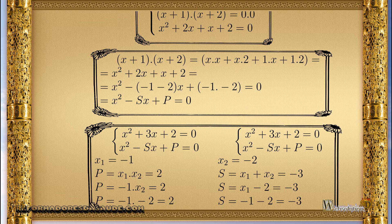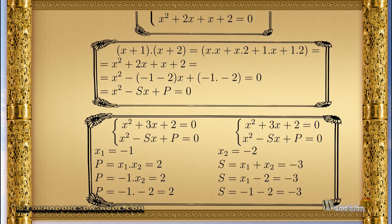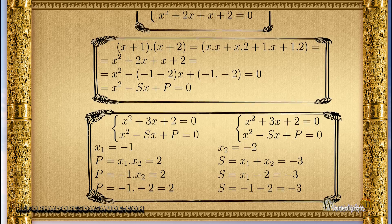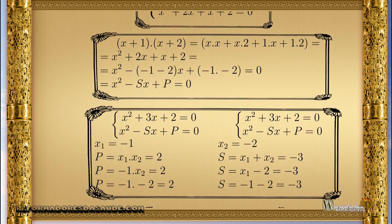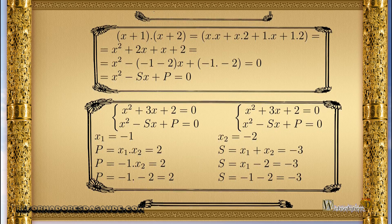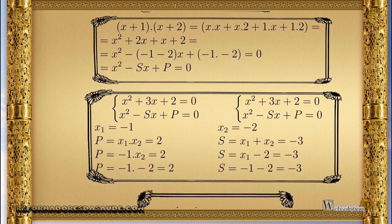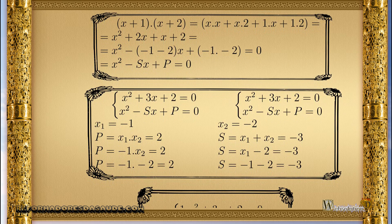For example, if I know one root is minus 1, I look at P which has value 2. Since P is the product of both roots and one of them is minus 1, only the value minus 2 multiplied by minus 1 generates the value 2. So we find the second root.